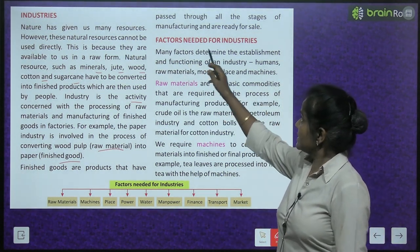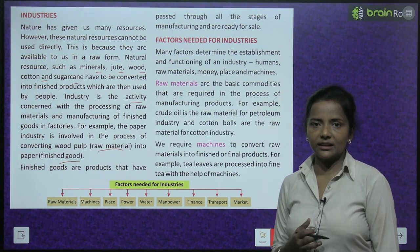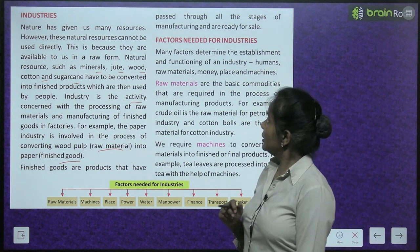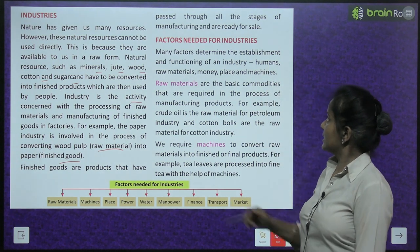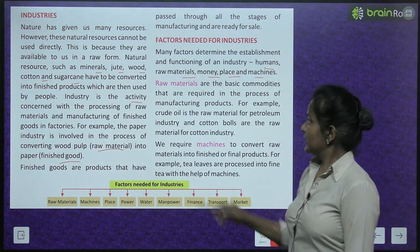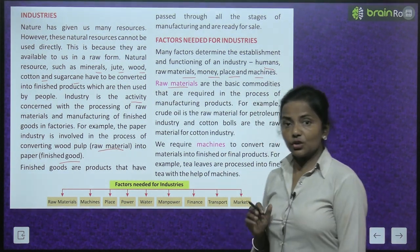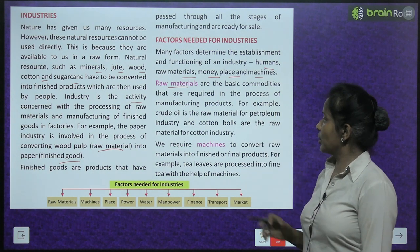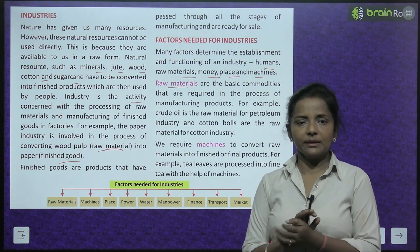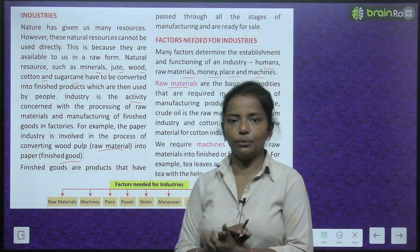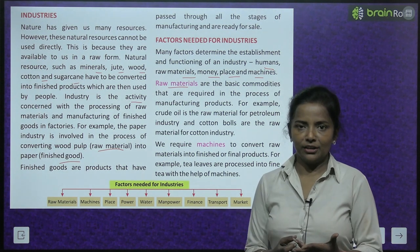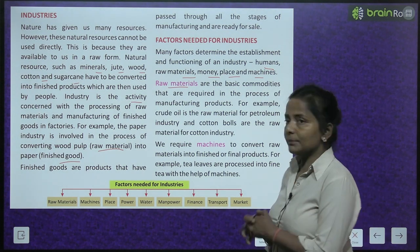Now, factors needed for industries. Many factors determine the establishment and functioning of an industry, including humans, raw materials, money, place and machines. Raw materials are the basic commodities required in the process of manufacturing products. Without raw materials, you cannot manufacture anything.